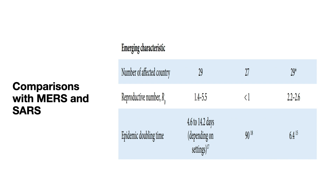The epidemic doubling time for novel coronavirus is just 6 days, while for MERS it was 90 days and for SARS it was around 14 to 15 days. This means the number of patients is very rapidly increasing in novel coronavirus infection.